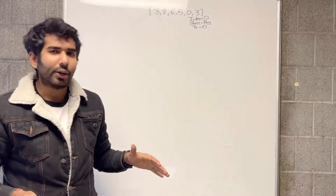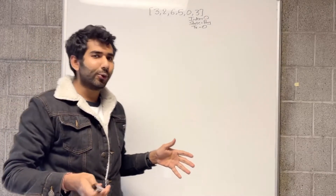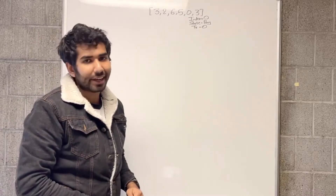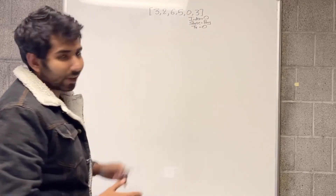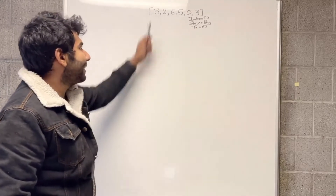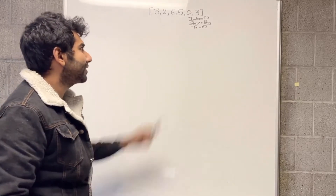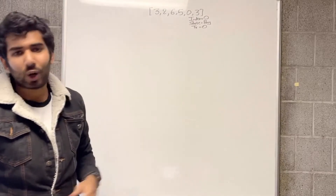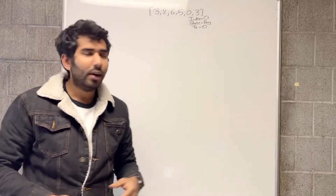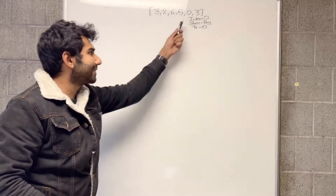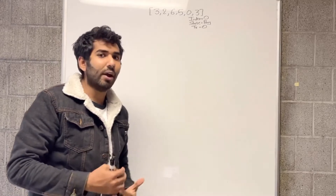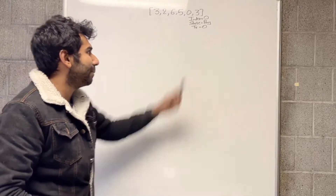Before we start the recursion, let's look at the variables we need to keep while recursing. The first value will be the index, which points to the current price — starting at 0, we start with the first price. The second is the state: buying or selling. Since we haven't bought anything, we start with the buying state. Third is the transactions done so far, which starts at 0.